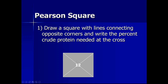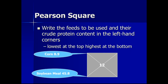For the Pearson square method, first draw a square, then put the required nutrient quantity in the center. In this example, our objective is to balance a ration containing 12% crude protein. Next, write down the available feedstuffs on the left side of the square: corn grain and soybean meal. Write the ingredient name along with its protein content. Corn contains 8.9% protein and soybean meal contains 45.8% crude protein.